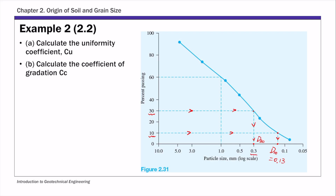And finally, for d60, start from the y-axis at 60% finer, or 60% passing — they are the same thing — and then read the corresponding x-axis value. That's d60, and d60 for this curve is 1.0.